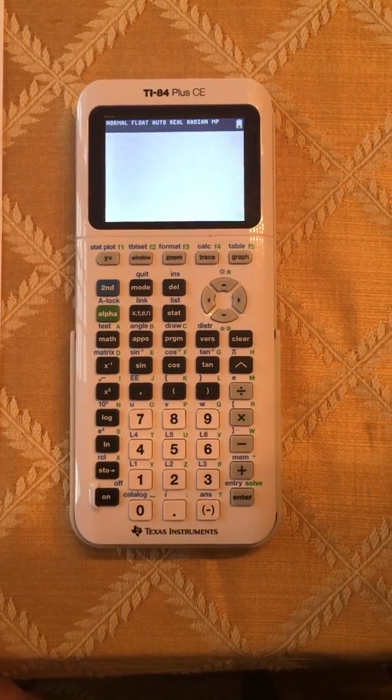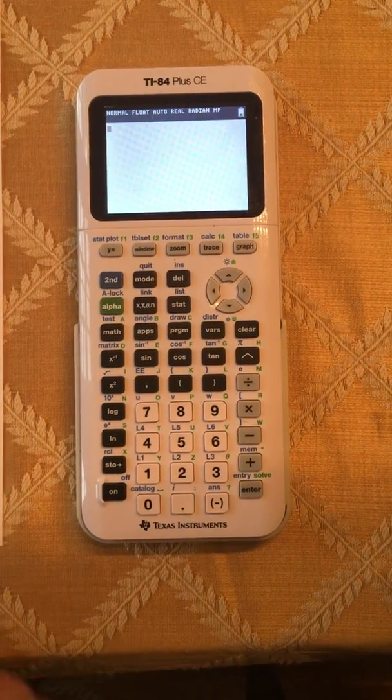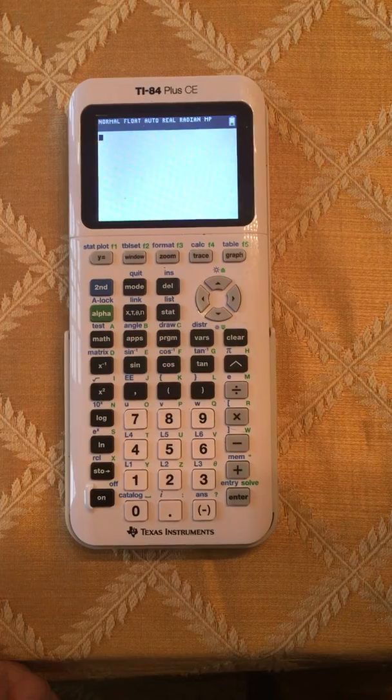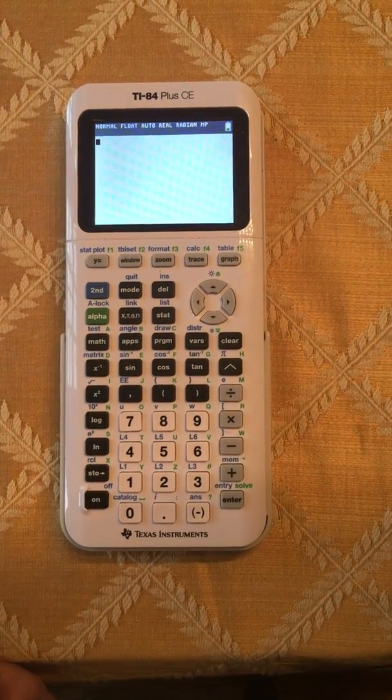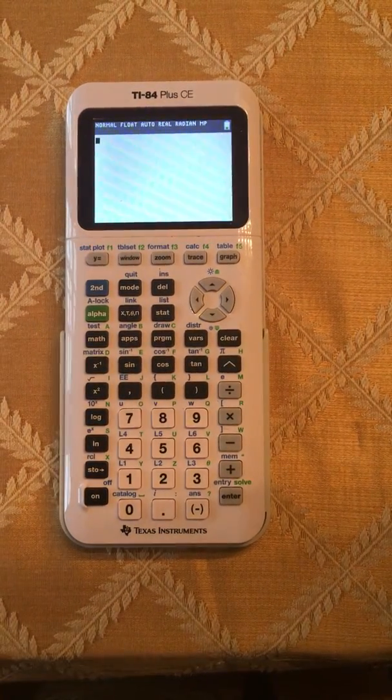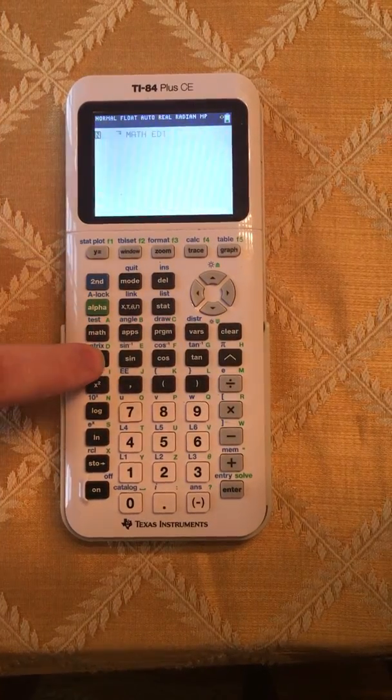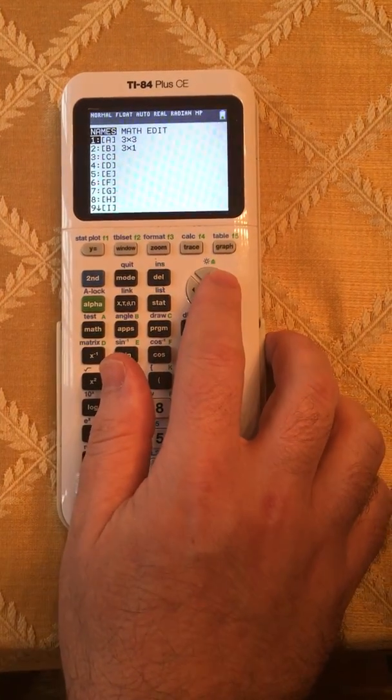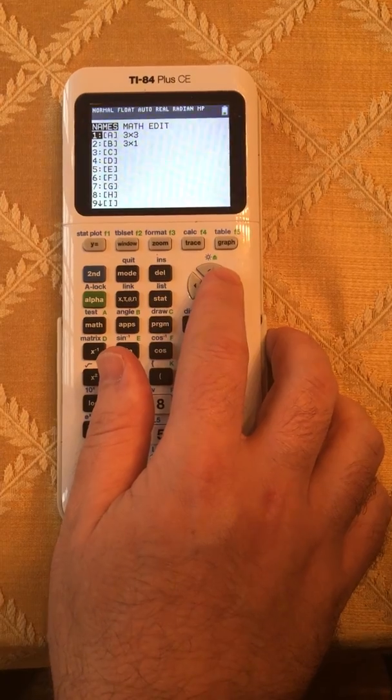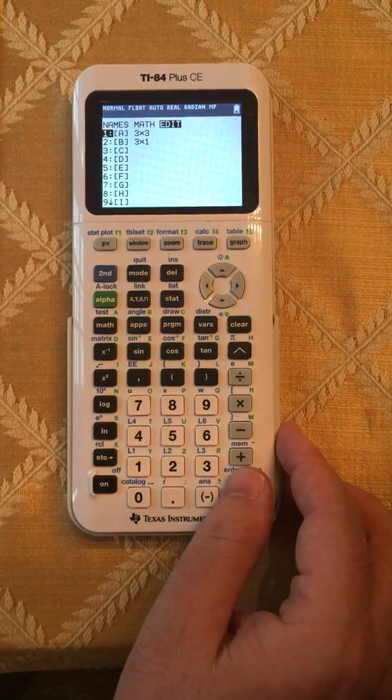So the problem in the matrix chapter at the very bottom of the first page has two matrices, a 2 by 3 times a 3 by 2. First hit second matrix, and then if there's anything in there you'll need to clear it out. You hit right right and hit enter.